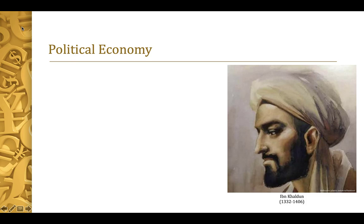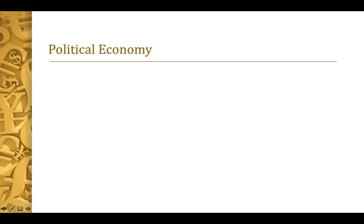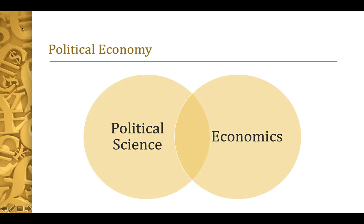Indeed, Khaldun's observation that civilization and its well-being, as well as business property, depend on the productivity and people's effort in all directions, in their own interests and profit, can be seen as a direct precursor to the work of early political economists like Adam Smith and David Ricardo. Perhaps the easiest way to think about the field of political economy is as operating at the intersection of political science and economics, while simultaneously drawing on a variety of other fields, including sociology, geography, history, psychology, cultural studies, and ecology, among others.